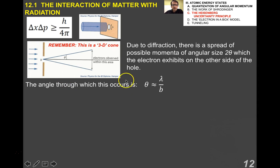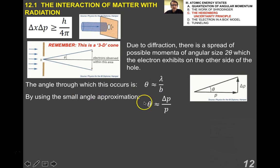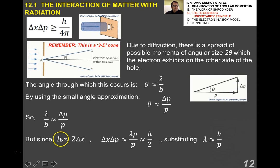The angle through which this occurs is from the angle for the diffraction of a laser through a slit. This theta is approximately equal to lambda over B. By using the small angle approximation, if this is delta P and this is P, we have that theta is also delta P over P. Lambda over B is approximately equal to delta P over P, but since B was approximately equal to 2 delta X, if we solve all this, we end up with delta X delta P is approximately equal to H over 2. This derivation is qualitative and quite approximate because it doesn't have that factor of 2 pi in it, but it gives you an idea of how Heisenberg arrived at his uncertainty principle.